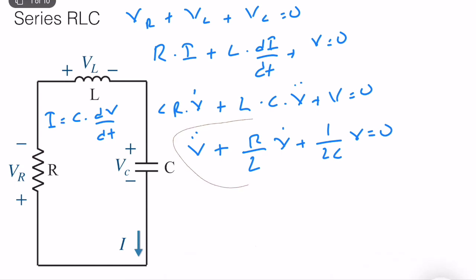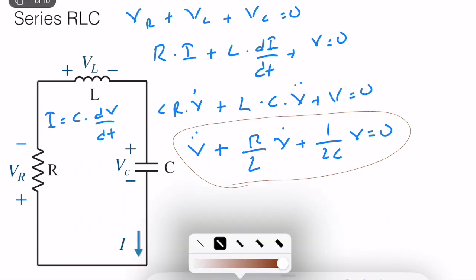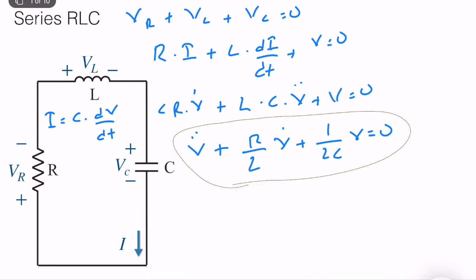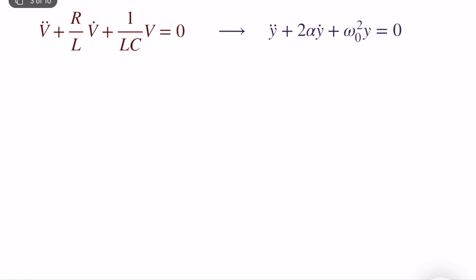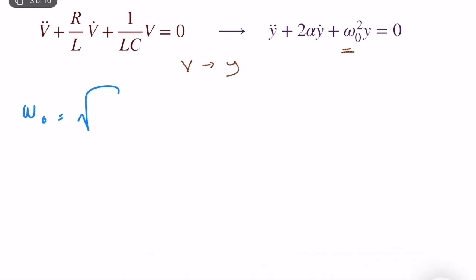This is the ODE, and as I noted before, the most important part of analyzing a second order circuit is finding the ODE — this is the main modeling step. We now put it in standard form, mapping V to Y. We compute the natural (resonant) frequency omega_naught, which equals 1 over the square root of LC.